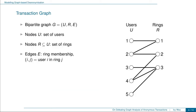To formalize our question, we define the notion of transaction graphs, which is a graph representation of the ring memberships of transactions. A transaction graph is a bipartite graph G represented by the tuple (U, R, E), where U is the set of users, R is the set of rings, and E is the set of edges representing ring memberships, where an edge (i, j) means that user i is in ring j.